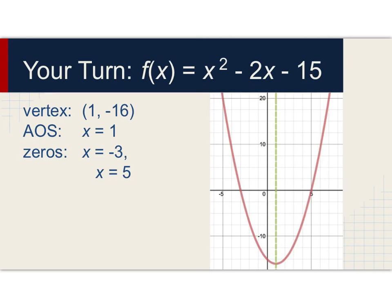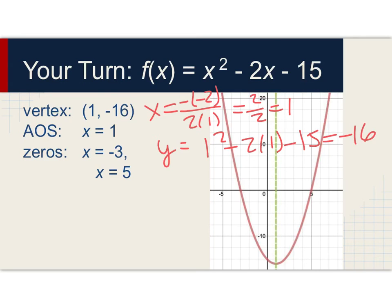First, the vertex in this case is the point (1, -16). The x-coordinate was coming from x = -(-2) over 2 times 1, which is 2 over 2, which is 1. To find the y-coordinate, you would plug it in: 1² - 2(1) - 15, and that ended up being -16. The axis of symmetry is derived directly from this. The fact that the x-coordinate of the vertex is 1 means that the axis of symmetry is x = 1. The axis of symmetry is the equation of a line that goes through the vertex, so it always has to have the same x-coordinate as the vertex.